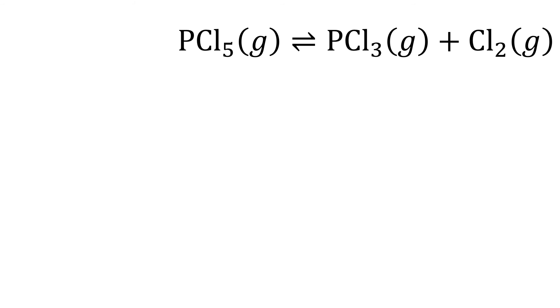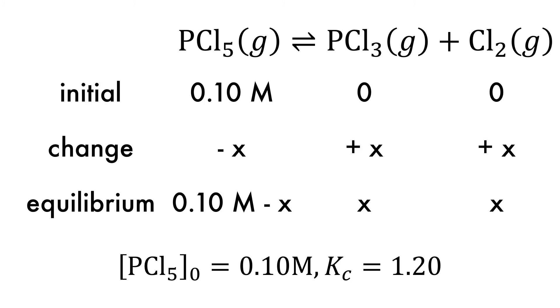What about instances where the solution is not so simple and a quadratic equation is needed, such as in the decomposition of PCl5? The initial concentration of PCl5 is 0.10 moles per liter and Kc is 1.20 at a given temperature. Using the usual format, the ICE box can be assembled.